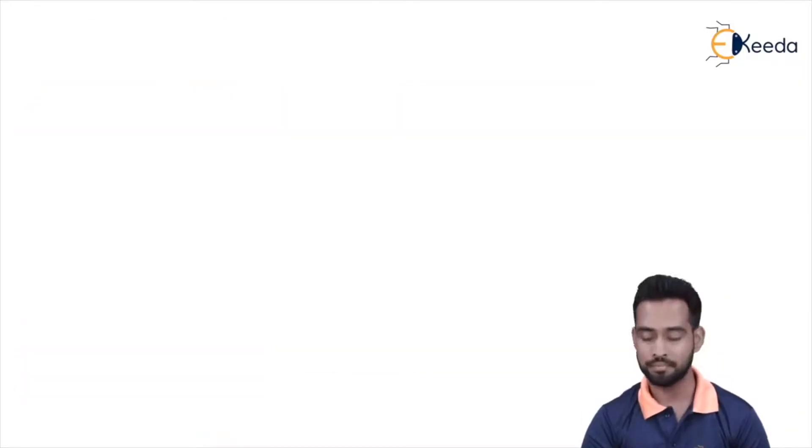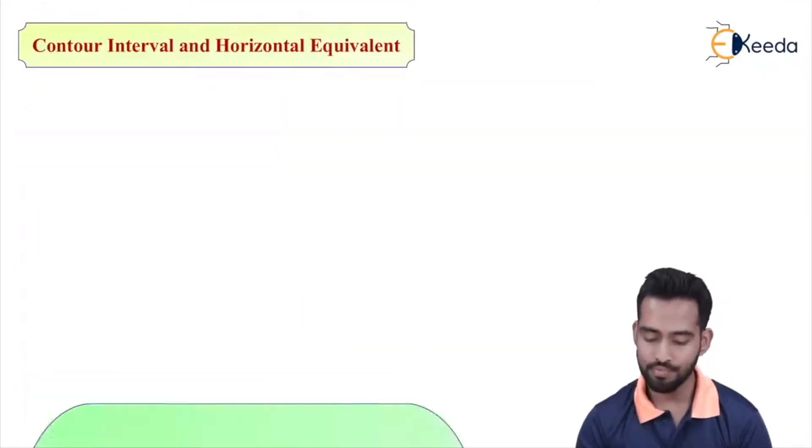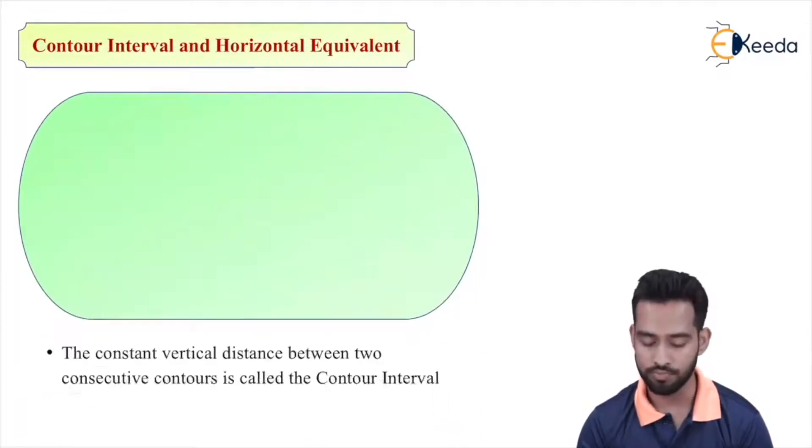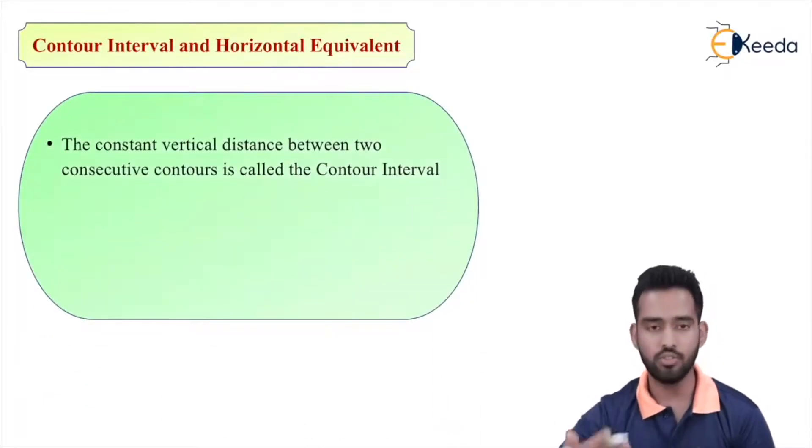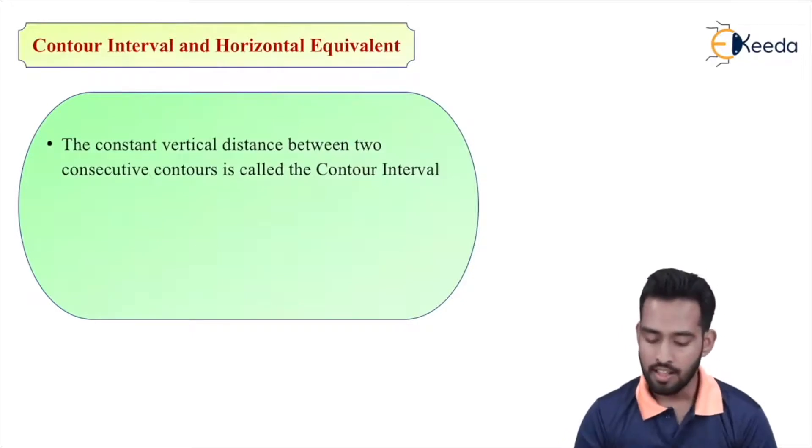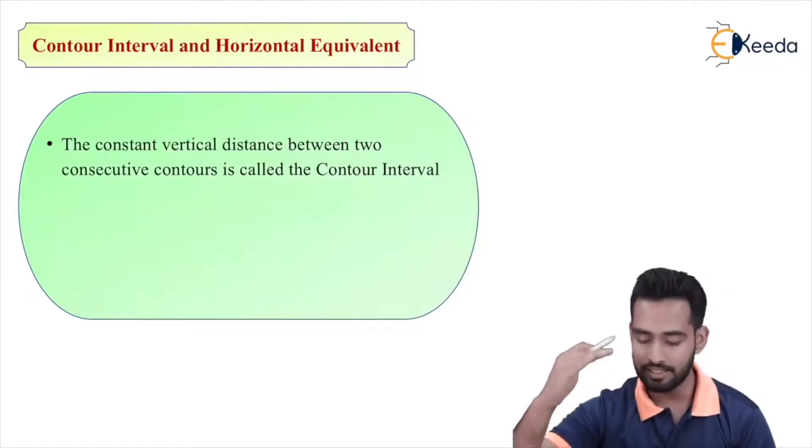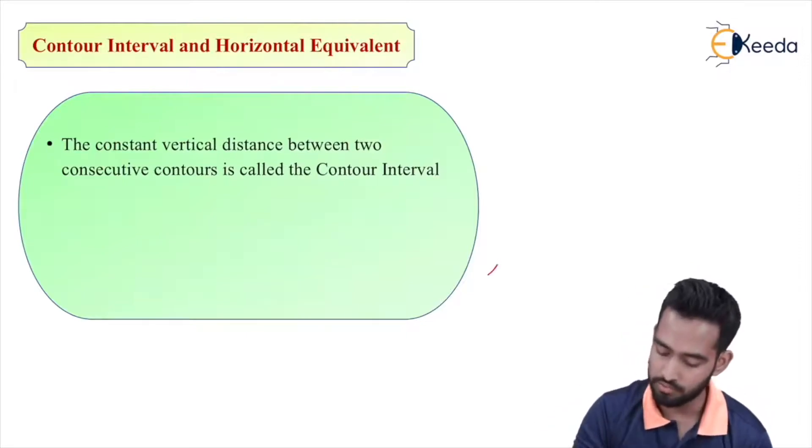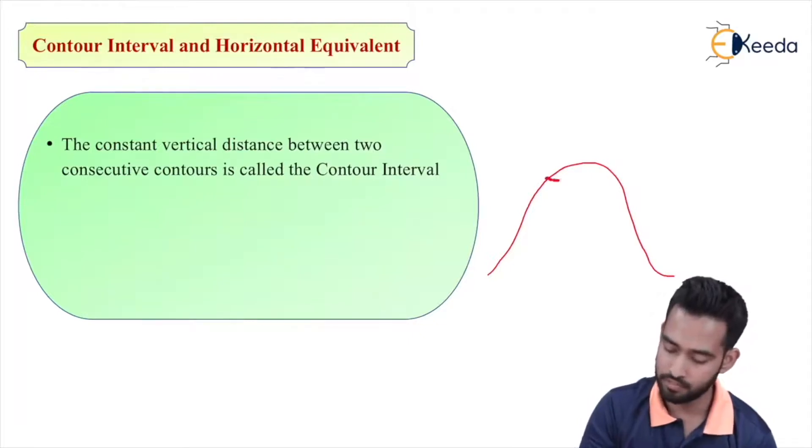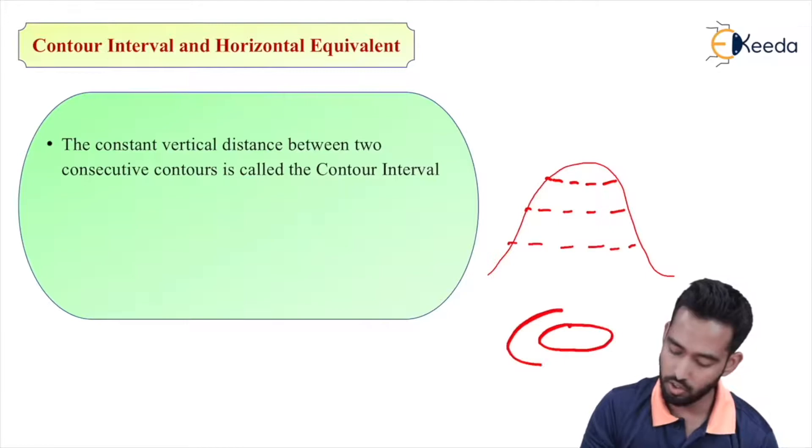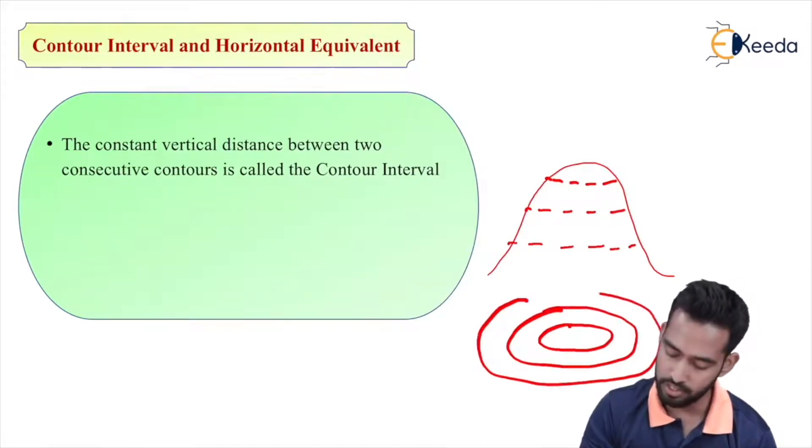Now the next definition we use is contour interval. What is contour interval? The constant vertical distance between two consecutive contours is known as contour interval. I will explain over here - suppose this is a mountain section and we have drawn a mountain section, and I will give you a top view for your better understanding.